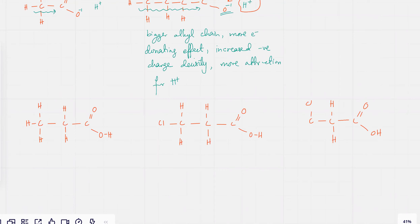And then you have a third one, and in that case there are two Cls attached. Now, again, in each case they're all carboxylic acids. The H would break away, and if it ionizes there's going to be a minus one charge, minus one charge, and a minus one charge over here. Which negative ion is going to have the largest negative charge out of the three?